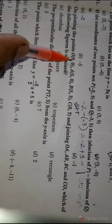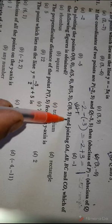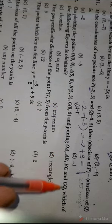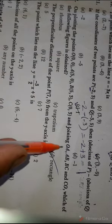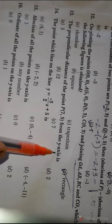Question number 12: on plotting the points O(0,0), A(5,0), B(5,3), C(0,3) and joining O-A, A-B, B-C, C-O, which figure is obtained? When you join them you will get a rectangle. Just plot this and join according to the given image, you will get a rectangle.